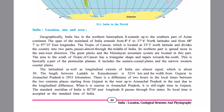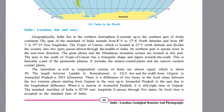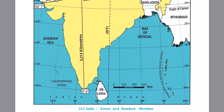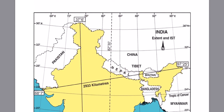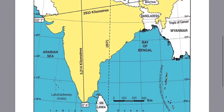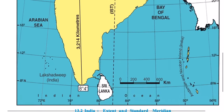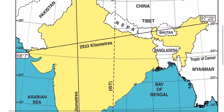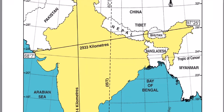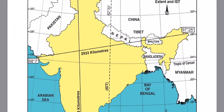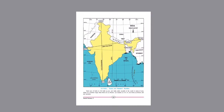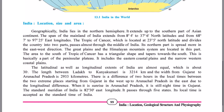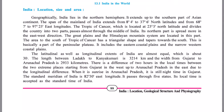From Ladakh to Kanyakumari it is 3,214 kilometers, and from Gujarat to Arunachal Pradesh it is 2,933 kilometers. So from the tip of India to the bottom — Ladakh to Kanyakumari — it is 3,214 km, and across from Gujarat to Arunachal Pradesh is 2,933 km. As a result of this large area, you can find a difference in timings.